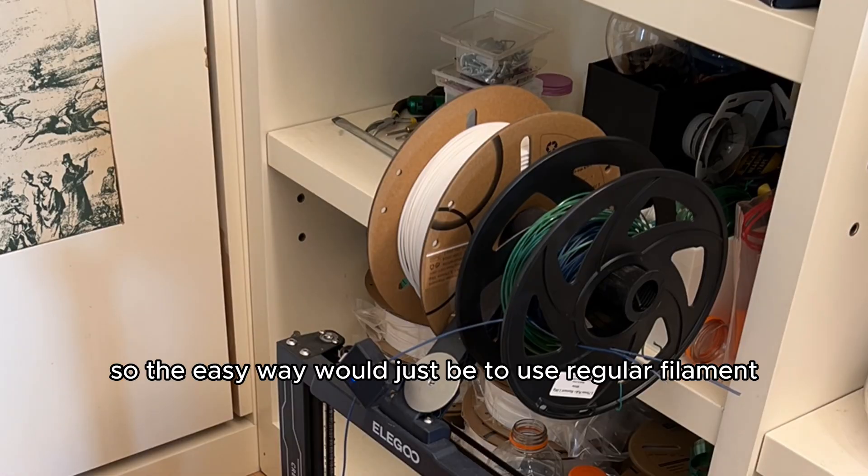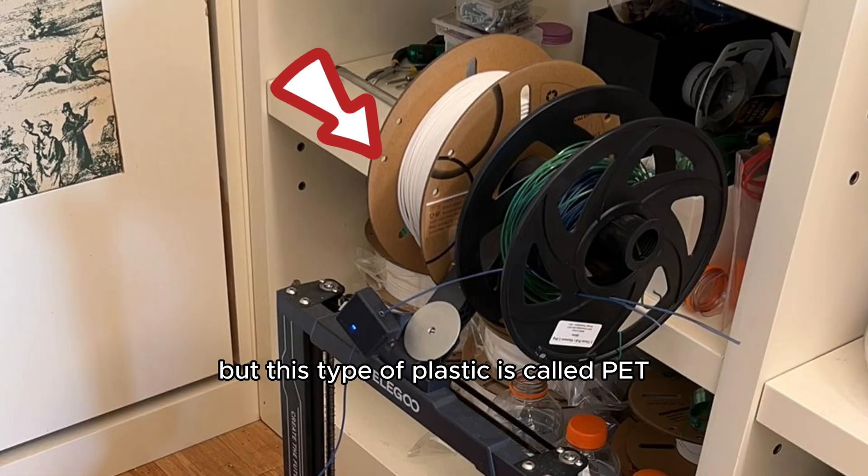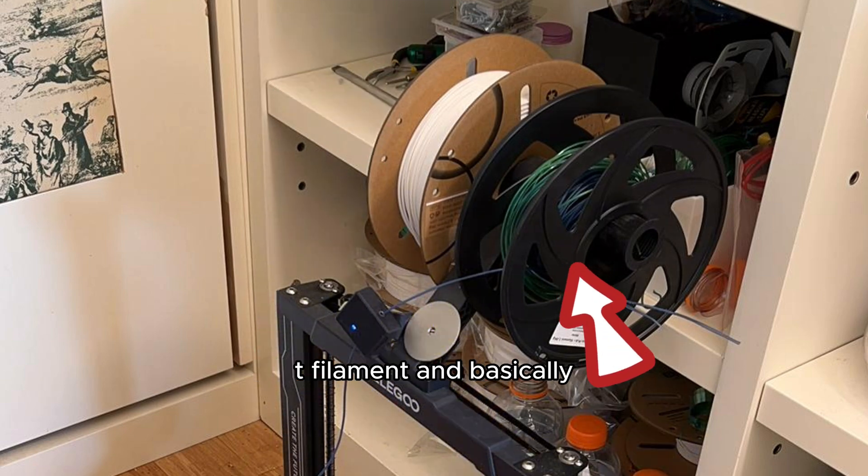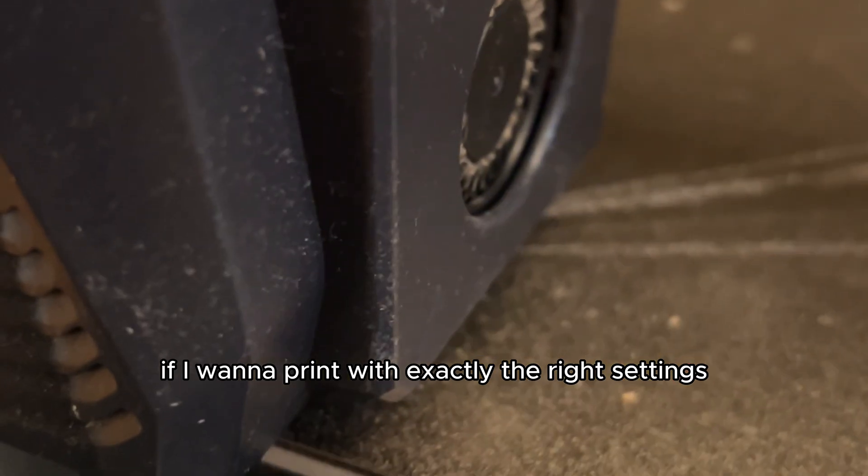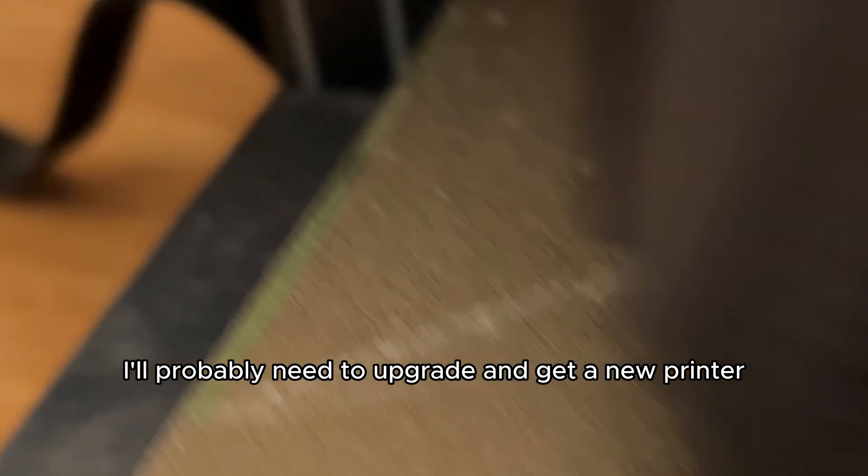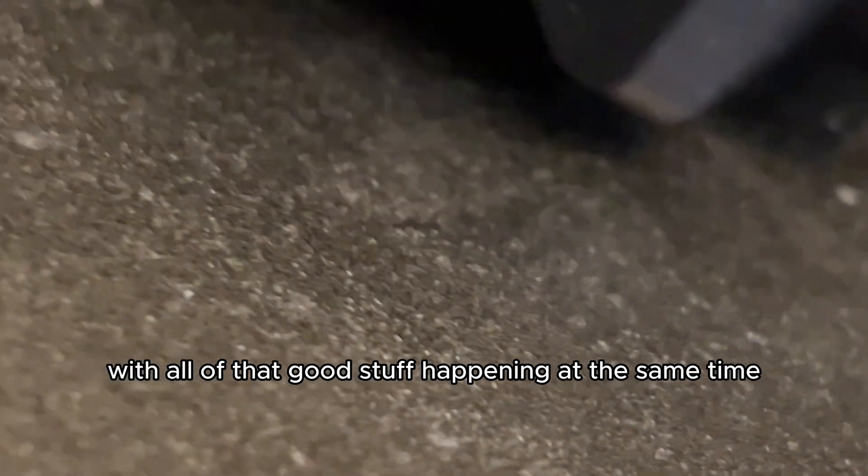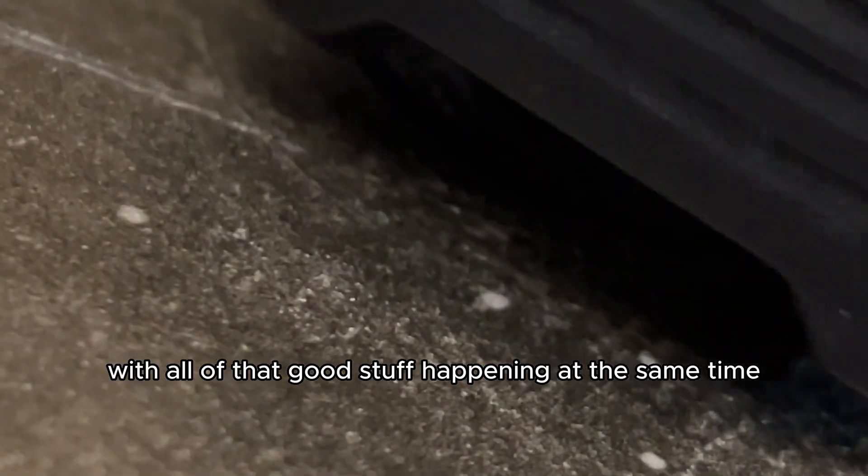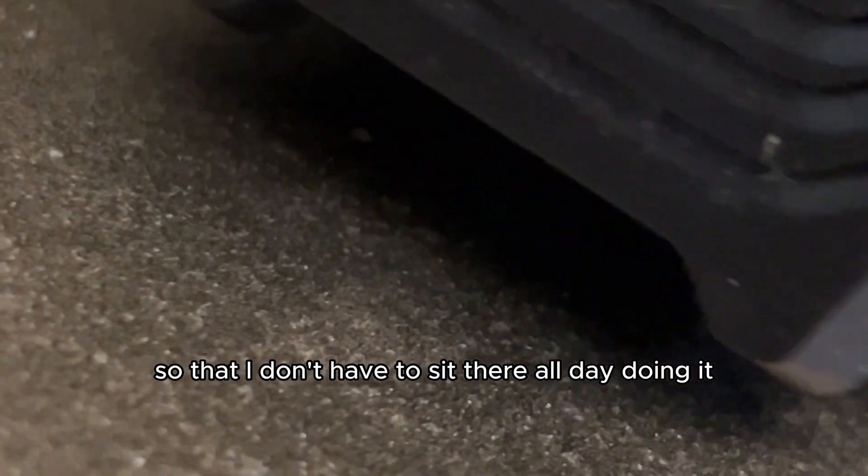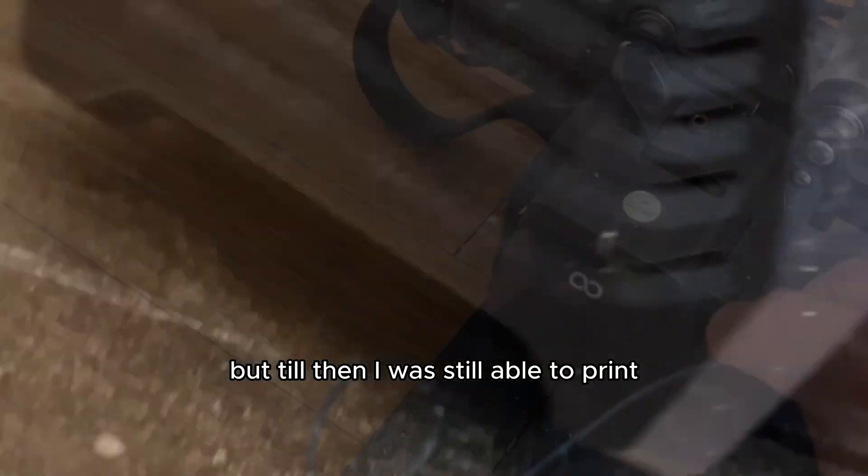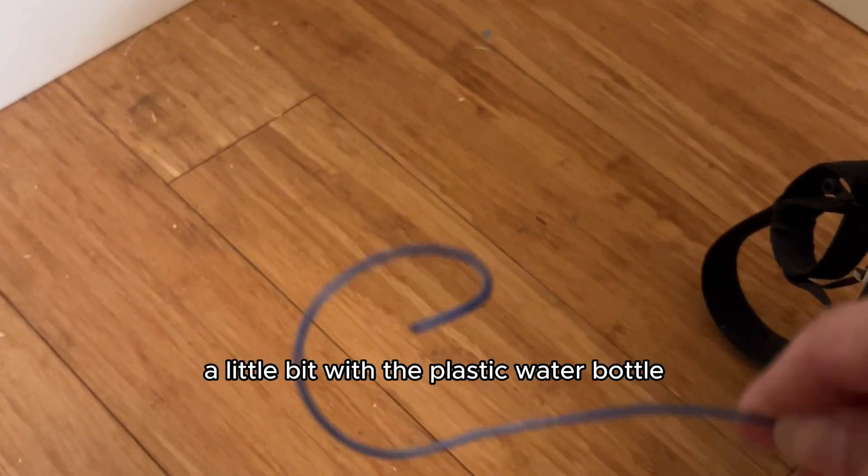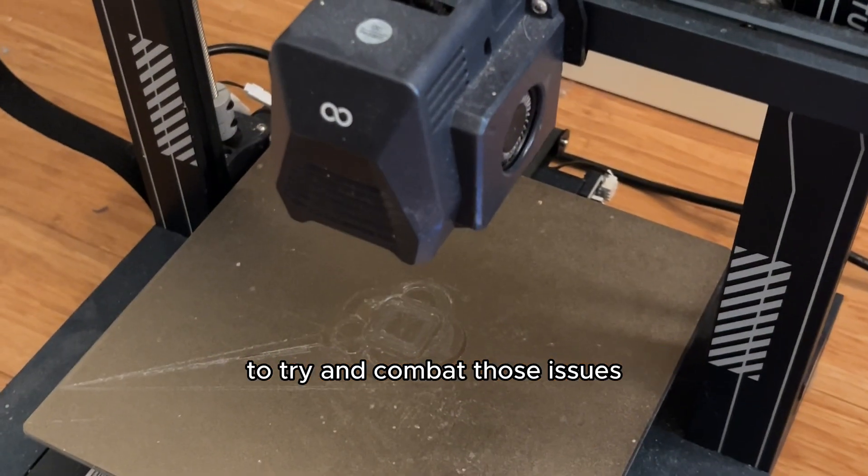The easy way would just be to use regular filament which is known as PLA plastic, but this type of plastic is called PET filament. Basically if I want to print with exactly the right settings I'll probably need to upgrade and get a new printer all together, hopefully one with the piece that I can attach that will just cut my bottles then melt them and then print them with all of that good stuff happening at the same time. But till then I was still able to print a little bit with the plastic water bottle, so I want to show you exactly what I did.